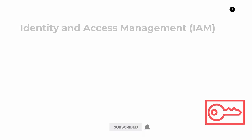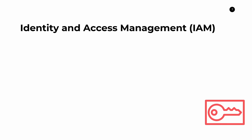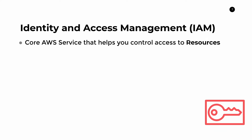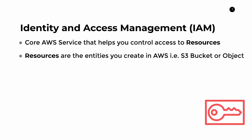First of all, what does IAM even stand for? Well, it stands for Identity and Access Management, and is what I would consider to be one of the core AWS services. Its function is that it helps you control access to resources. Resources are the entities that you create in AWS — for example, an S3 bucket, an S3 object, Lambda functions, or DynamoDB tables. IAM is the thing that allows or guards access to those resources.